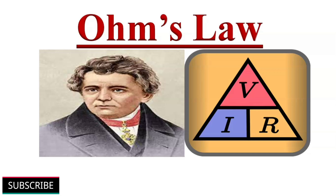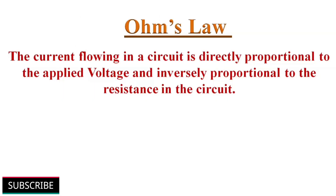George Simon Ohm, a German scientist, discovered Ohm's law — the relationship between voltage, current and resistance in an electrical circuit — in the year 1827. Ohm's law states that the current flowing in an electric circuit is directly proportional to the applied voltage and inversely proportional to the resistance in the circuit.